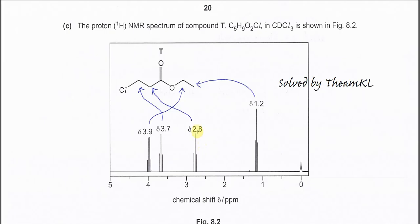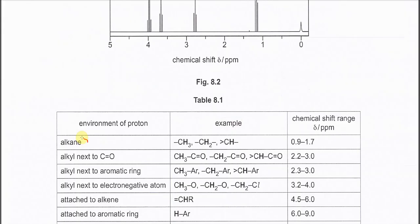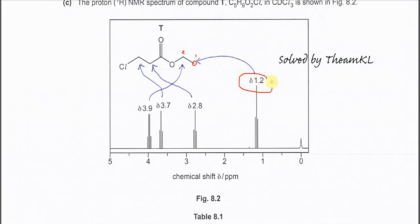Part C. This is the proton NMR of compound T. There are four signals: the first is a triplet, the second is a triplet, the third is also a triplet, and the fourth is a quartet. Starting with the CH3 group — it has a CH2 as a neighbour, so it's n+1 = 1+2, giving a triplet. This triplet appears around 1 ppm because the environment of those protons is alkane, following the chemical shift table.